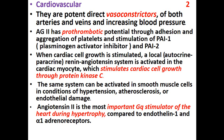Angiotensin 2 also has prothrombotic potential through adhesion and aggregation of platelets and stimulation of plasminogen activator inhibitor. Cardiac cell growth is stimulated locally — a renin-angiotensin system is activated in the myocyte which stimulates cardiac cell growth through protein kinase C.